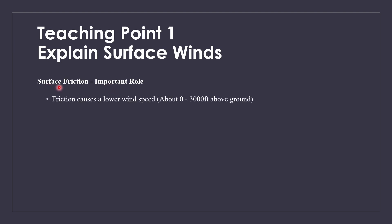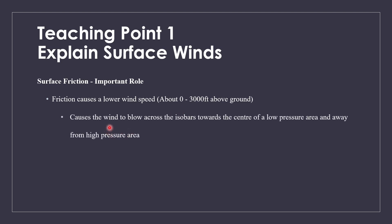So what is surface friction? It's basically friction between the air and the ground that causes a low wind speed. This affects from zero feet — so from the ground all the way up to 3,000 feet. This will cause the wind to plow across the isobars and toward the center of a low pressure area and away from high pressure areas. There are two main key things here: across the isobars.